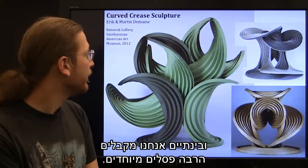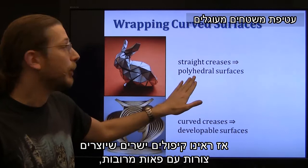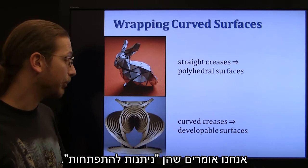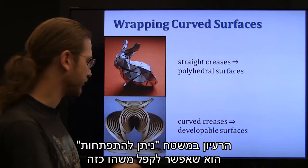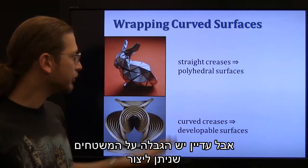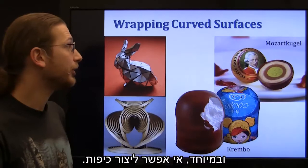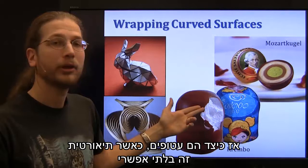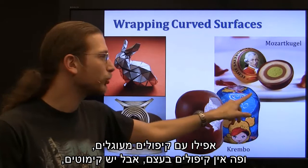Straight crease folding makes polyhedral surfaces with flat polygon sides. With curved creases, the sides are developable — you can fold a generalized cylinder or a generalized cone, but you're still limited in what surfaces you can make. In particular, you cannot make spheres. And yet there are spherical chocolates, like the Mozart Kugel, wrapped with a flat sheet of tin foil, and the Krembo, which has half of a sphere on it. So how are these things wrapped when it's theoretically impossible, even with curved creases? There are no creases — there's crinkling. So how can we model crinkling mathematically? This led to a new area of research.